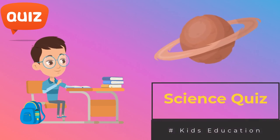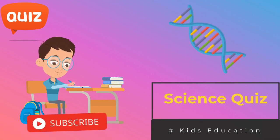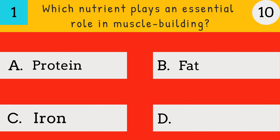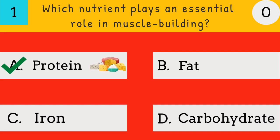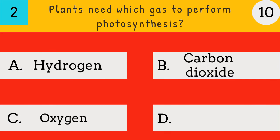Welcome to Science Quiz — be the science quiz star! Please subscribe for more fun videos. Which nutrient plays an essential role in muscle building? Protein, fat, iron, or carbohydrate? The answer is protein — protein plays an essential role in muscle building.